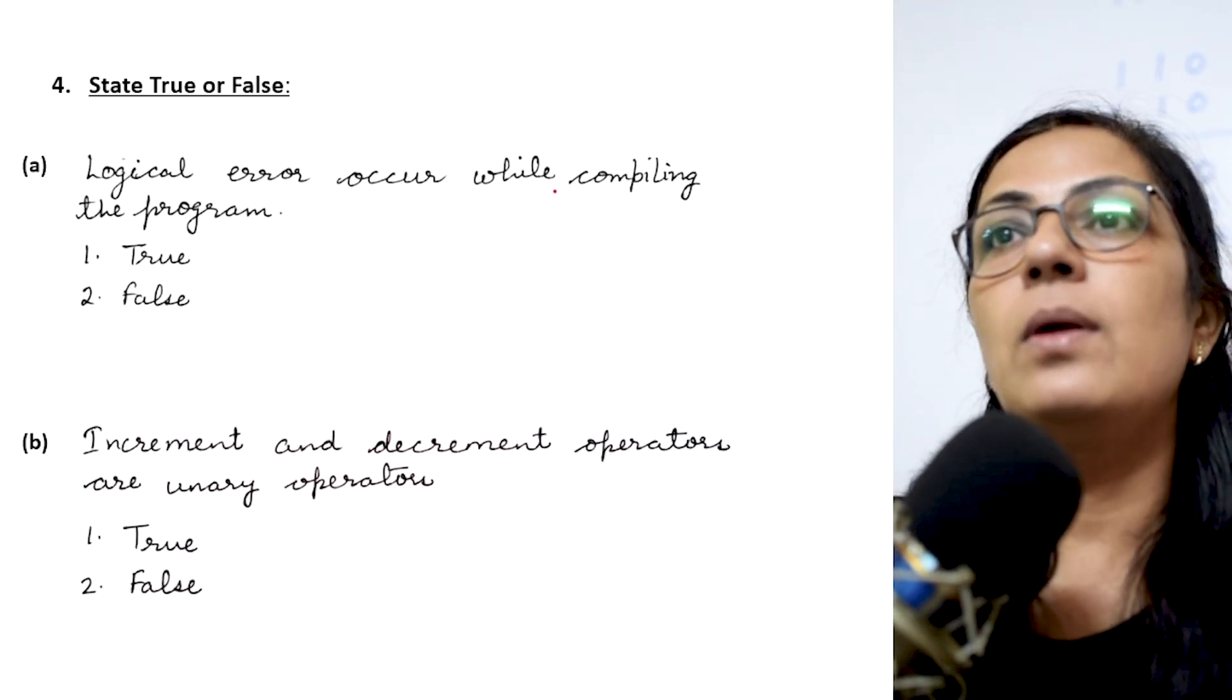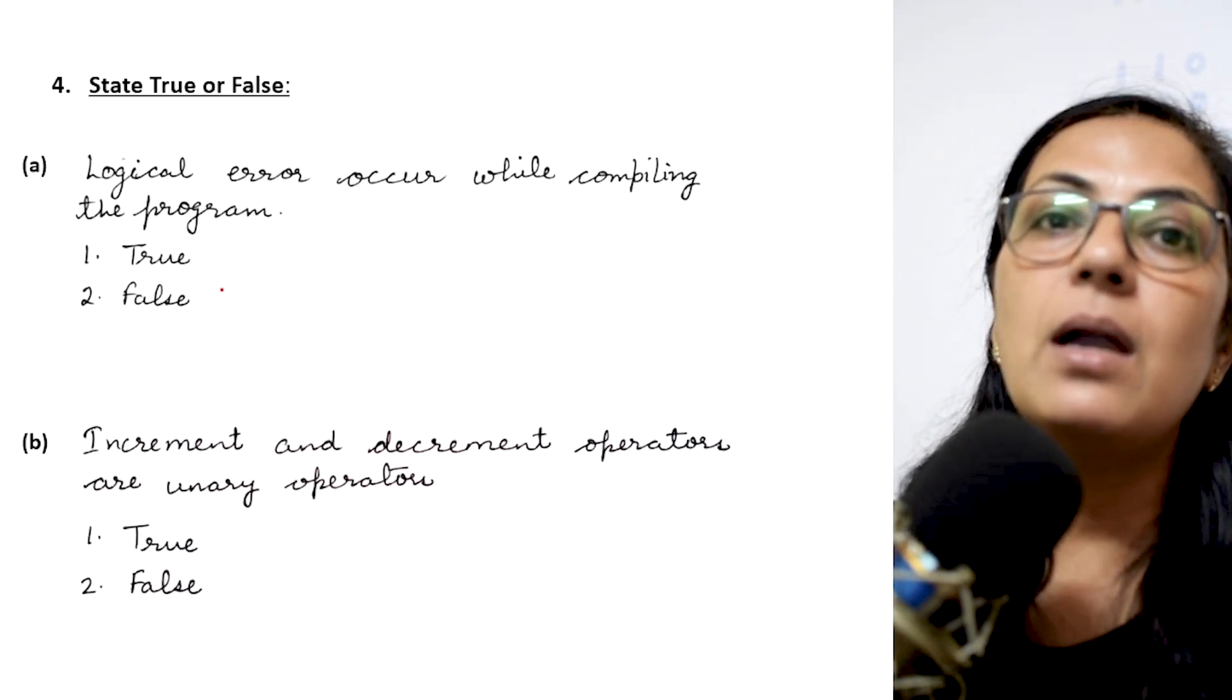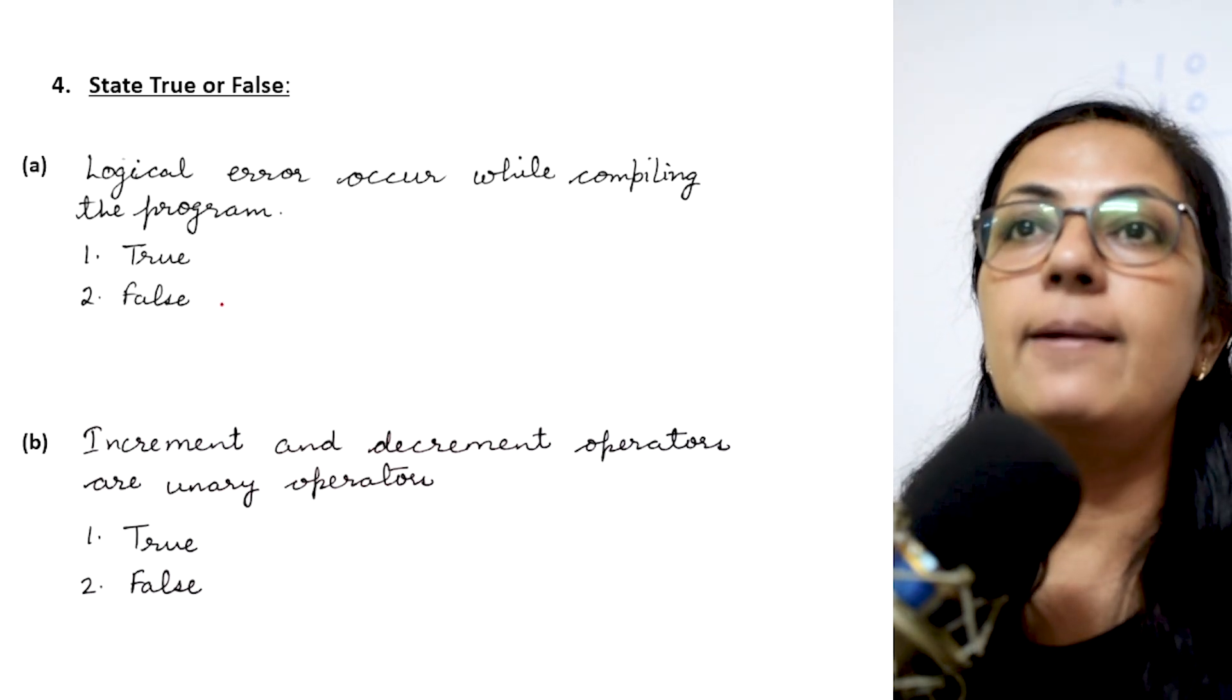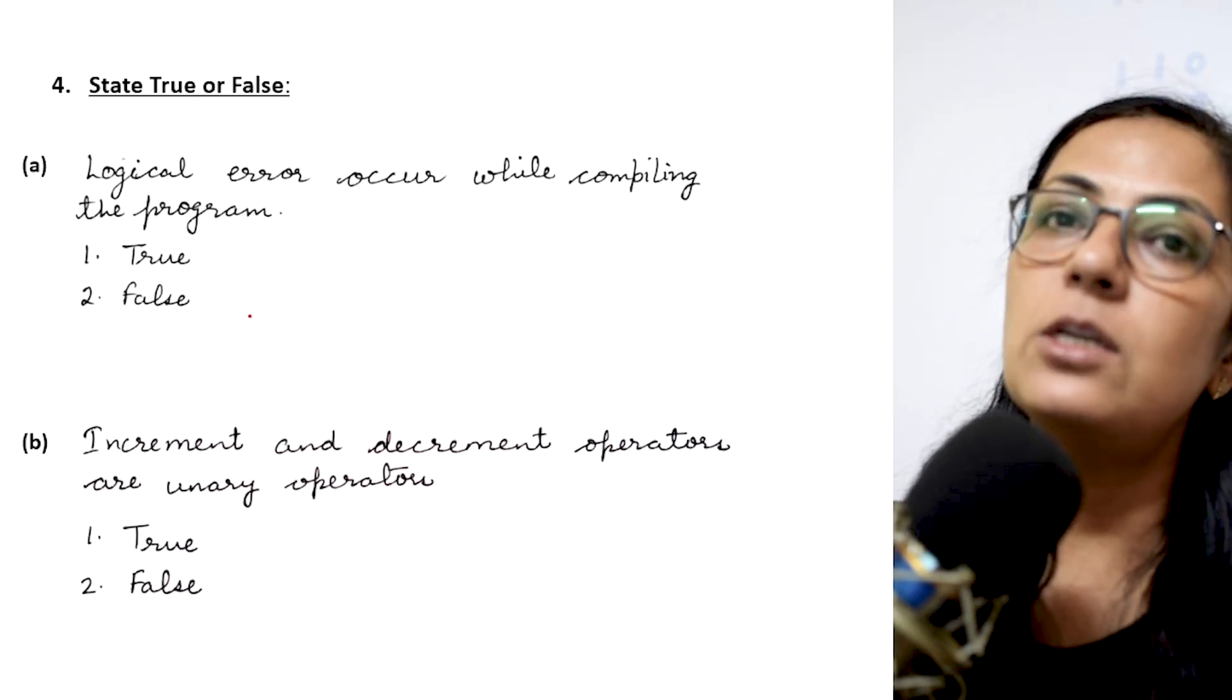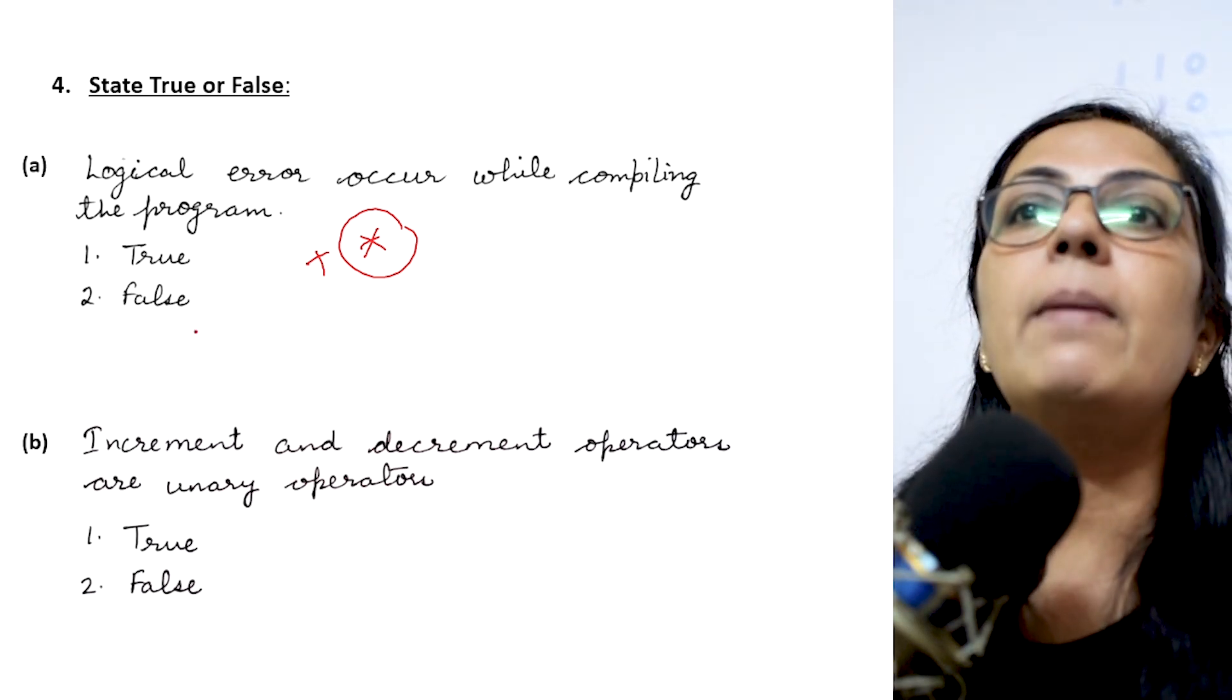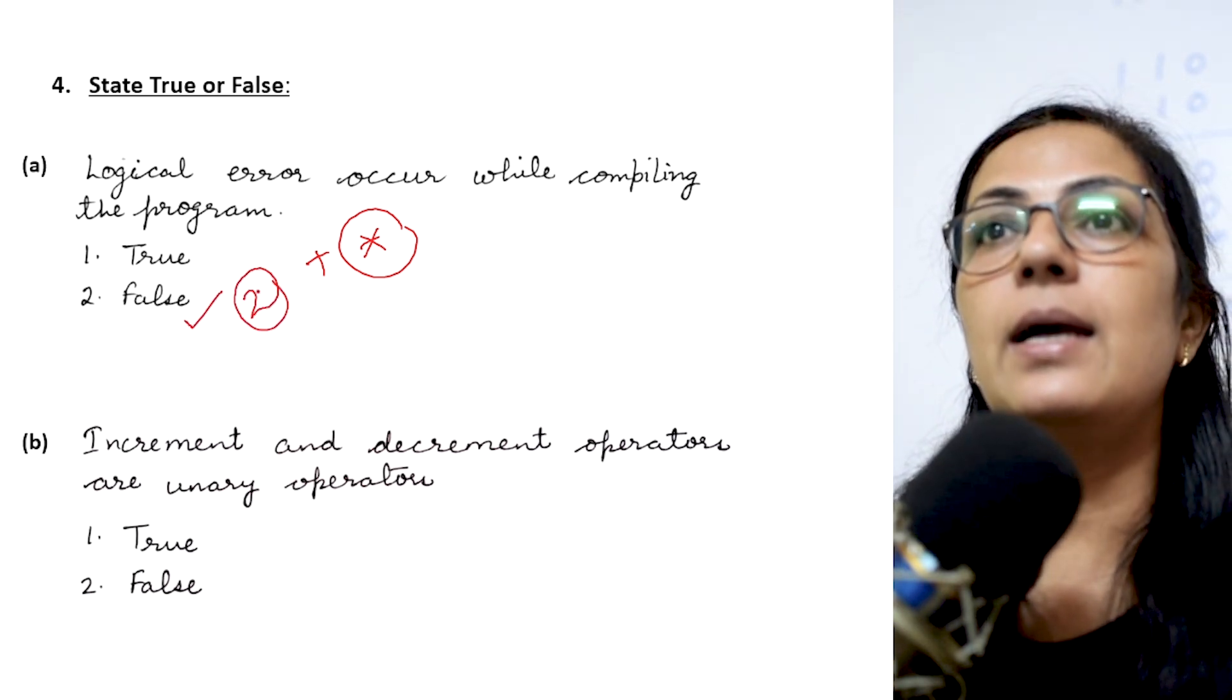Now true false. Logical error occur while compiling the program. No. Logical error you don't get any error when you compile the program. You can make out that error when you see the result, when you get the output. Output is not the desired output when we get the logical error. Like I gave you earlier, suppose I want to calculate the sum of two numbers and instead of plus operator I am using multiplication operator. There is no syntax error in that but logically it is wrong. So this will not occur when you are compiling the program. Children please note when you are compiling the program only the syntax errors are there. So your option 2 that is false is the correct answer.